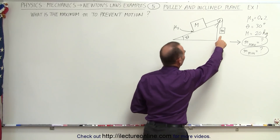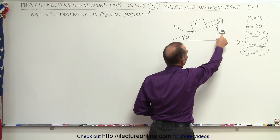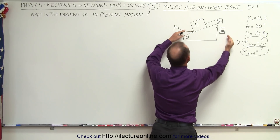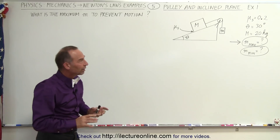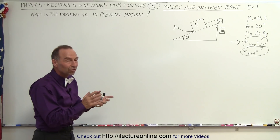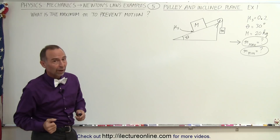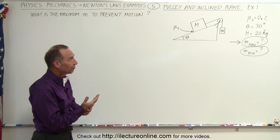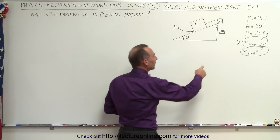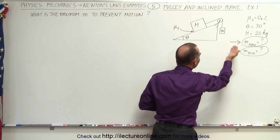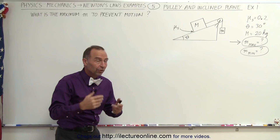If the small m is large enough, the whole system will accelerate in this direction. If the small m is small enough, the whole system will accelerate in the opposite direction. But what if it's in between — what if little m is just such that it will not accelerate in either direction? For that, we have to figure out the maximum and minimum value little m can be in order to prevent the system from accelerating.